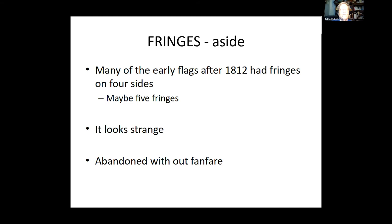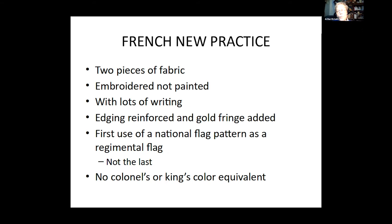Fringes are strange. The early fringes were on all four sides of the flag — maybe five fringes. It looks strange, and it dwindled without fanfare to what we think is normal now — three sides — but initially it was four. The French new practice was two pieces of fabric, embroidered rather than painted, with lots of writing, edging reinforced, and gold fringe added. This is the first use of a national flag pattern as a regimental flag, and it is now the most common system. There were no colonel's or king's colors or equivalents.